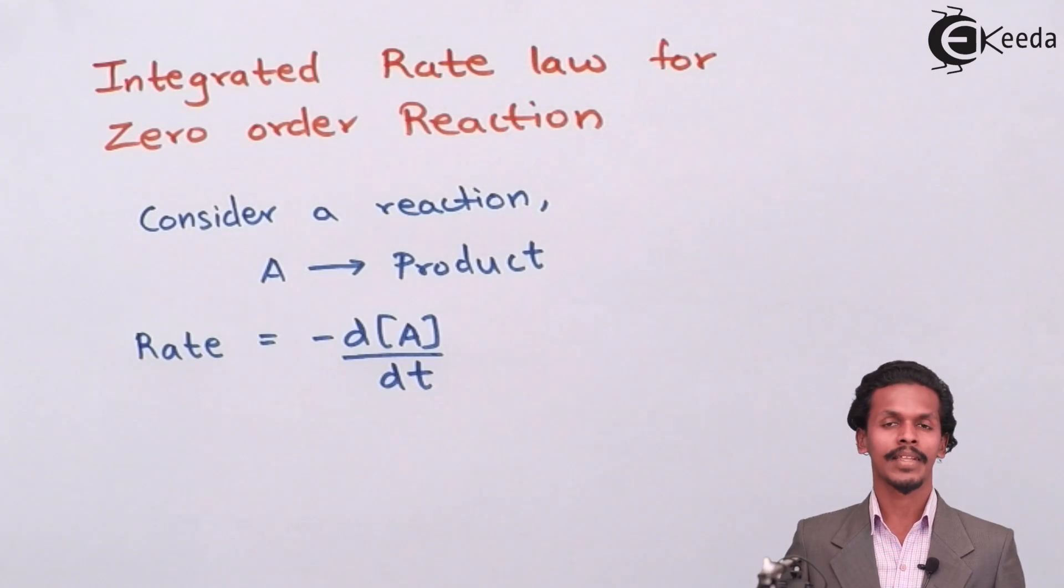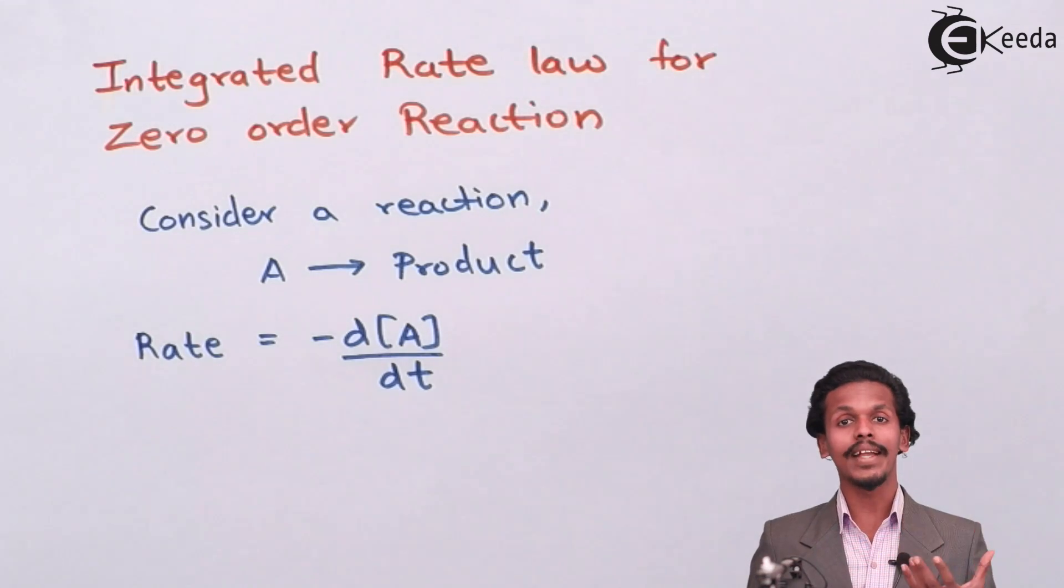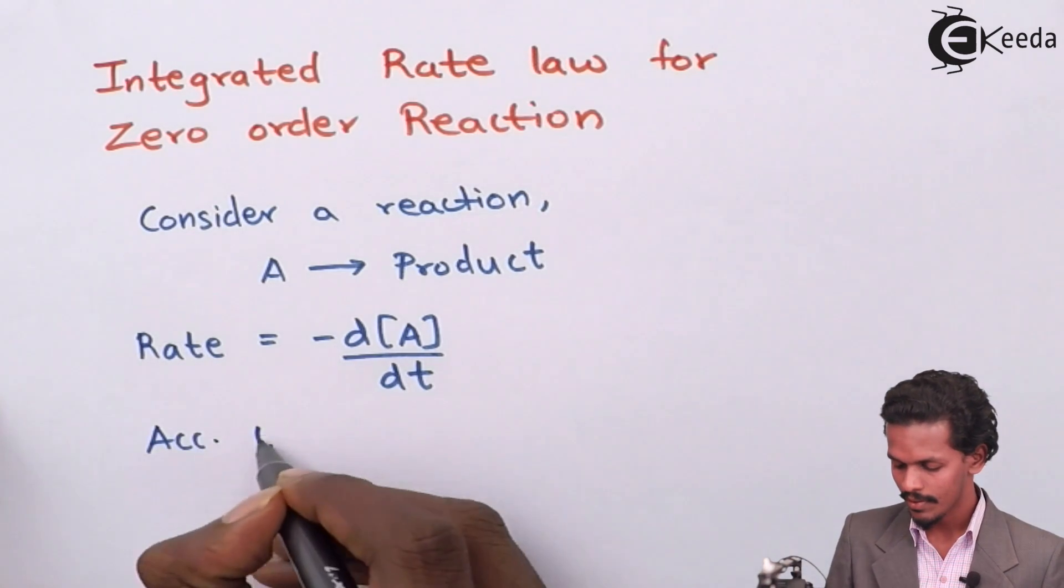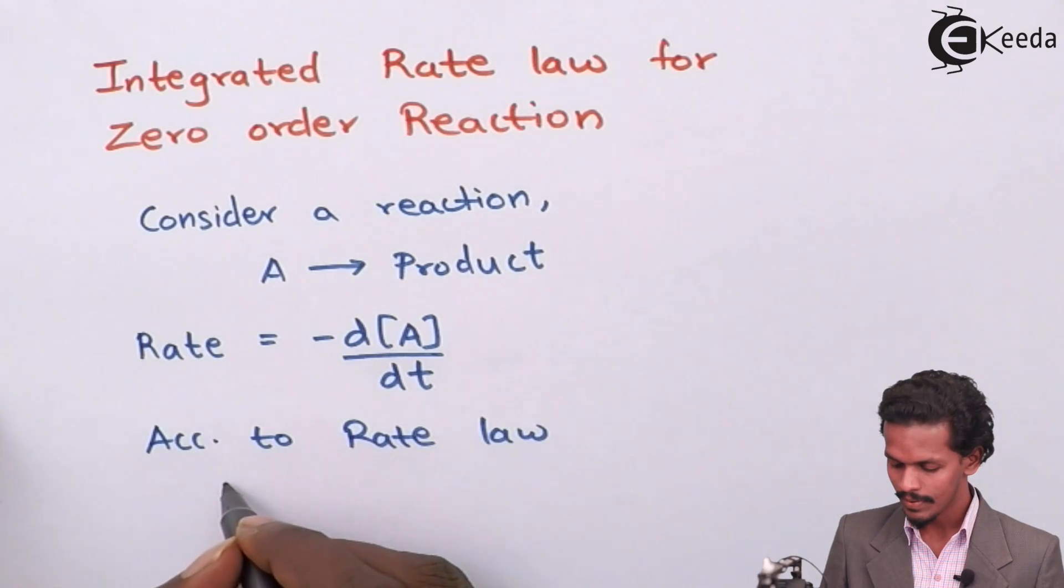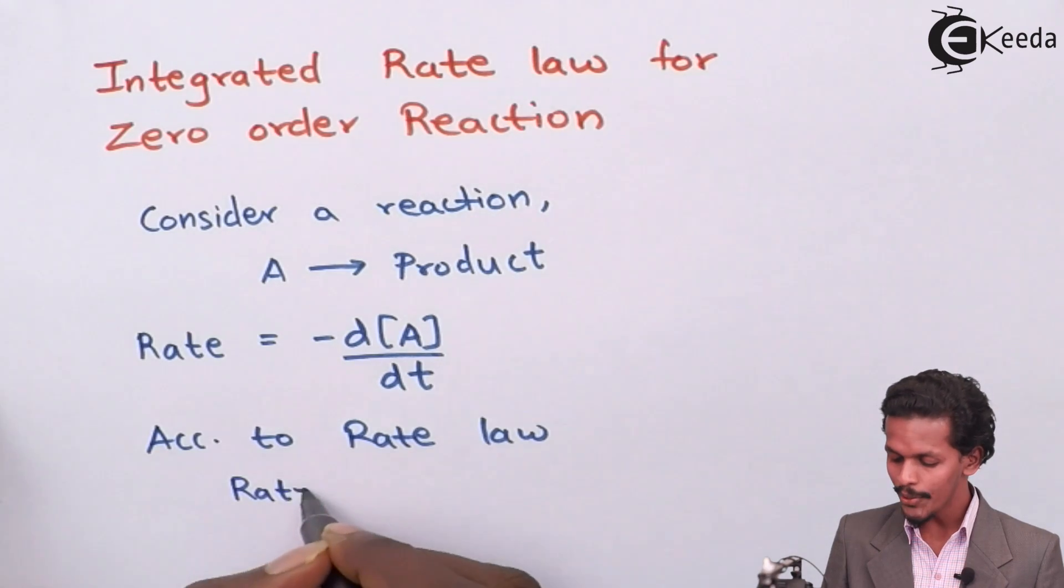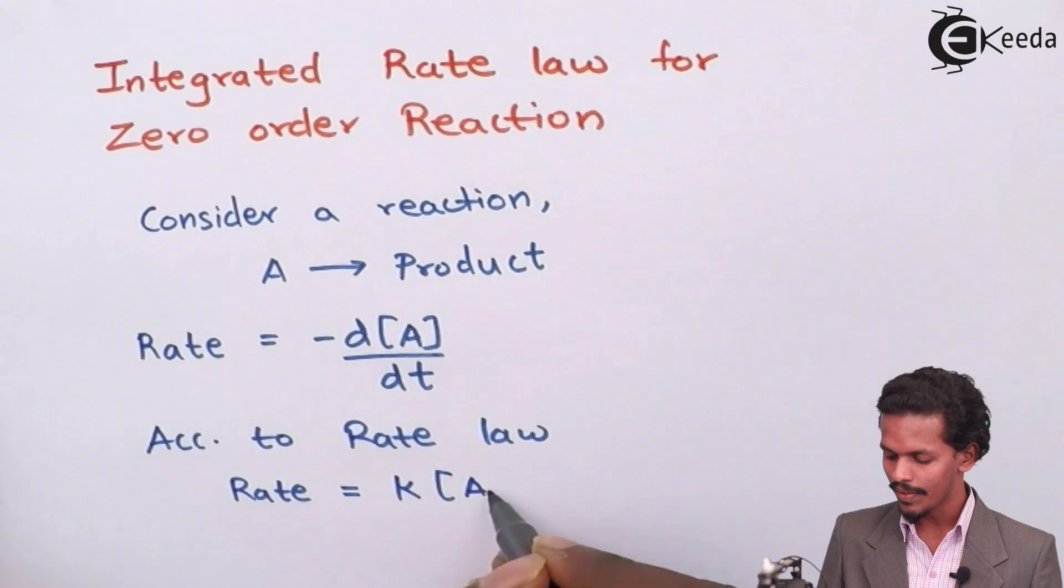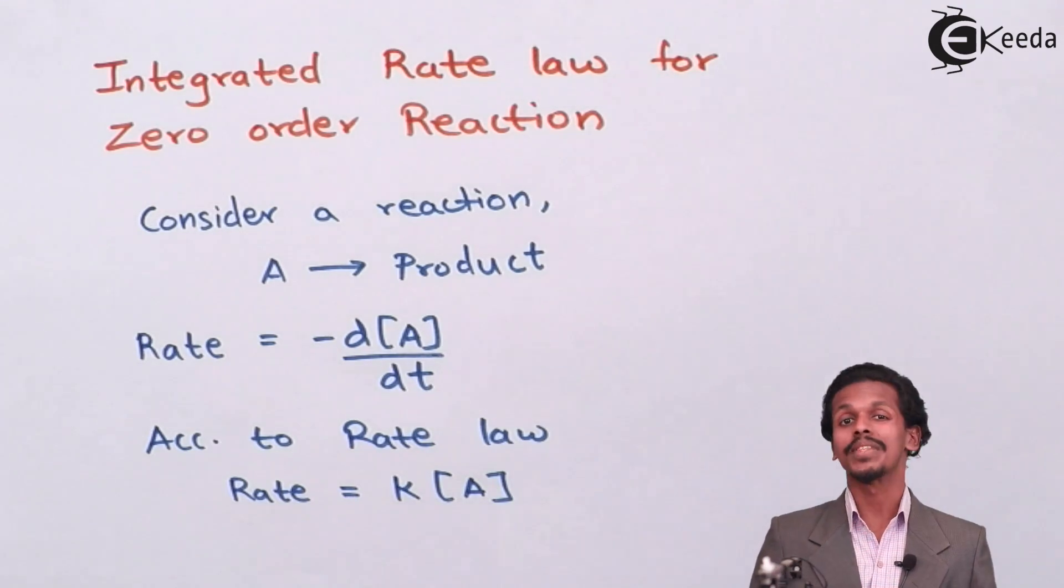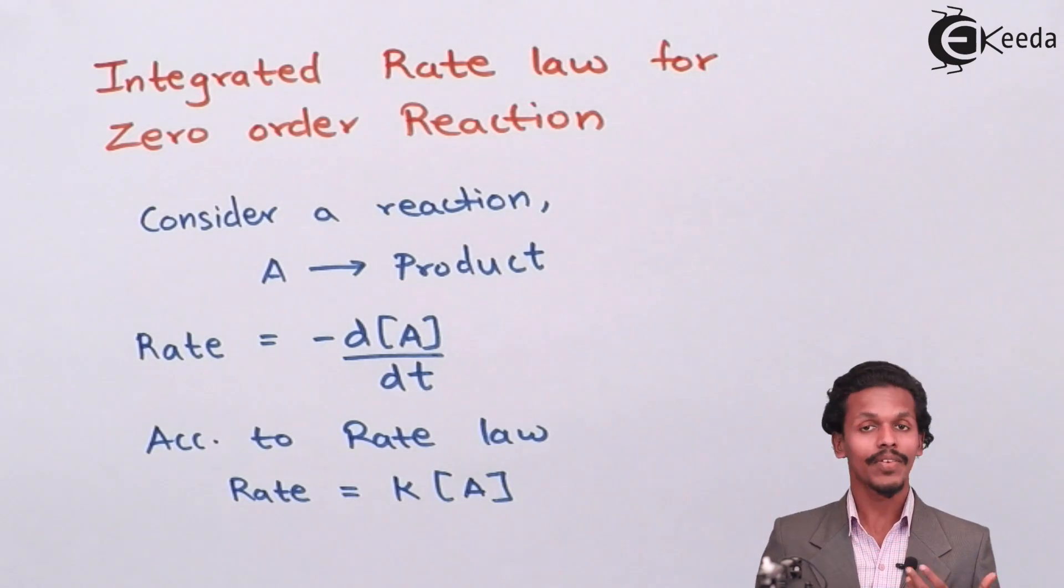Now since we are talking about a zero order reaction, we could write the zero order reaction in the form of rate law also. According to rate law, rate is K times concentration of [A] to the power of the exponent, but since it is a zero-order reaction, the experimental value, that is the value of the exponent in this case, will be zero.